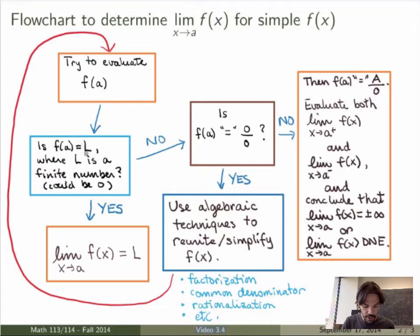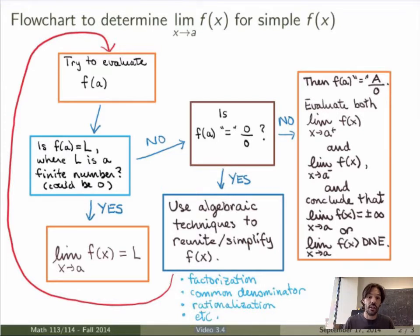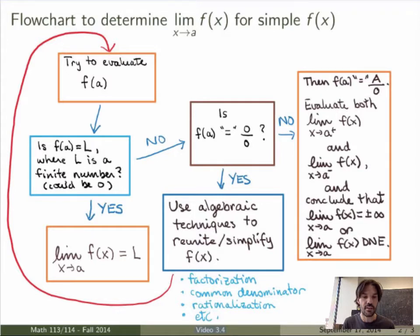If you get a finite number — so if you get that f(a) equals L, where L is a finite number (it could be 0, and 0 is perfectly fine) — then you're done. You know that the limit as x goes to a of f(x) is equal to L. That's of course only true if the function is simple enough. But that's great — you're finished and you know the value of the limit.